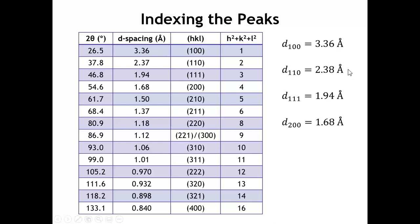Let's see how those values map back onto the D spacing values calculated from the peak positions in the powder diffraction pattern. 2.38 angstroms is pretty close to the D spacing of our second peak, so we assign that as the 1, 1, 0 peak. 1.94 angstroms is right where we expect for the 1, 1, 1 peak. And 1.68 angstroms also shows up in our list of observed peaks, so we assign that as the 2, 0, 0 peak. You can go on and do this for successive peaks, and each of the D spacings in the table can be assigned to a certain set of HKL values. The key thing is that the sum H squared plus K squared plus L squared is increasing as we go down, and as it increases the D spacing gets smaller.